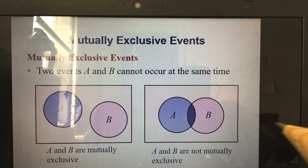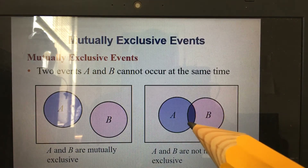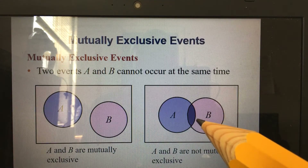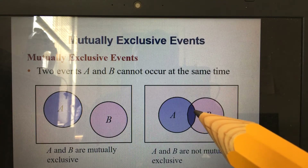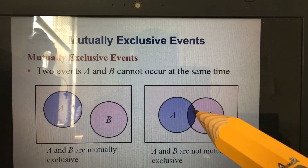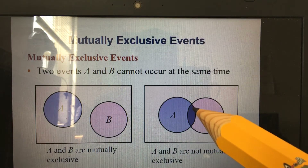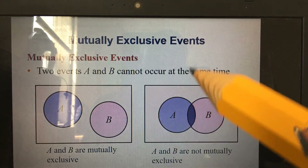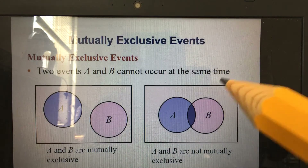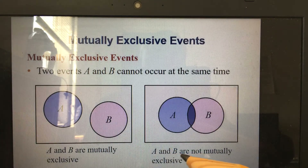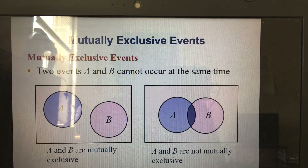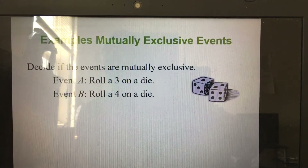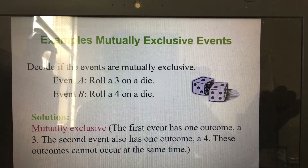In this case, A and B are not entirely separate because they have an intersection here — this is where they occur together. Because of that, we say that for this particular case A and B are not mutually exclusive.